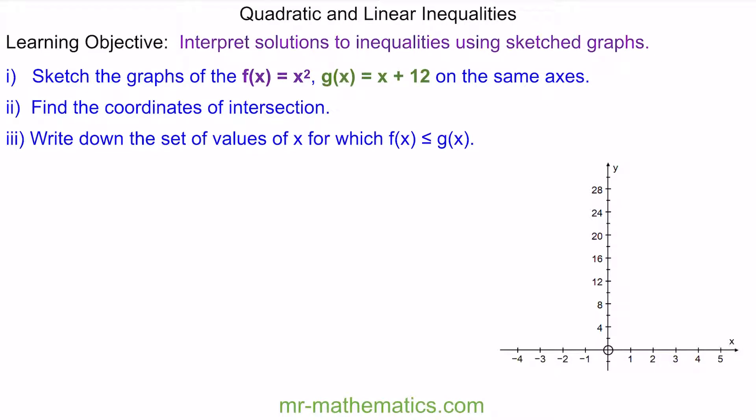We'll begin with f(x) equals x squared and g(x) equals x plus 12. We're going to sketch these two functions on the same graph, then find the coordinates of intersection, and use this to find the set of values of x for which f(x) is less than or equal to g(x).